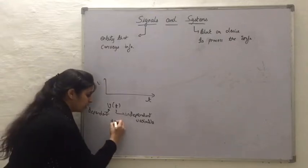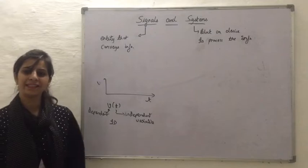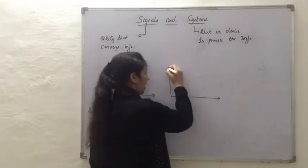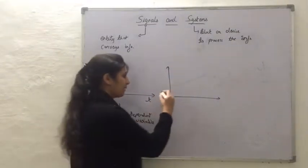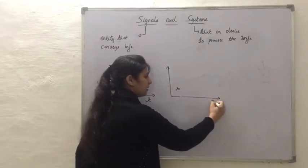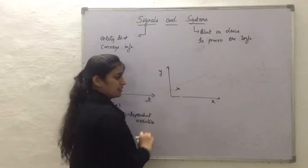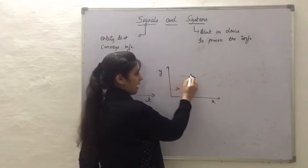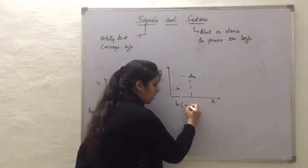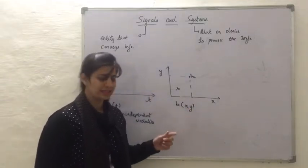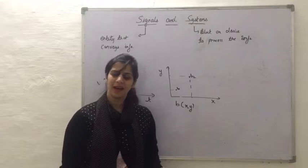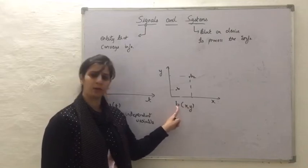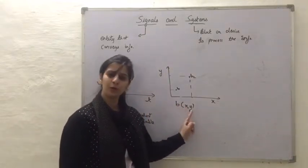This variable V depends upon a single variable, so this kind of signal is called a one-dimensional signal. The next example is when you look at a photo or a picture — that picture will have different brightness levels. The brightness B is a function of the x-axis and y-axis. The x and y variables are the independent variables, whereas B, which depends upon these variables, is the dependent variable. When a variable is dependent upon two other variables, it is called a two-dimensional signal.